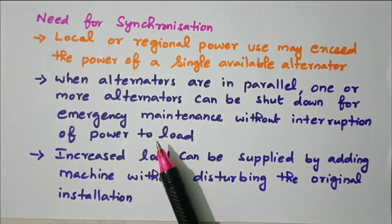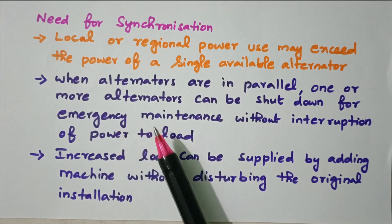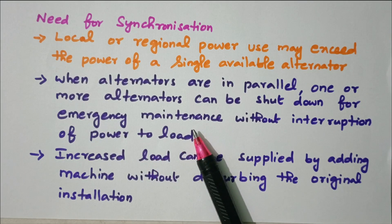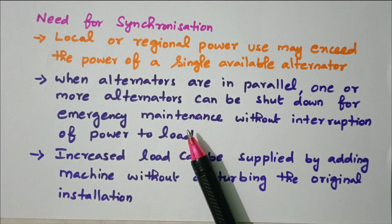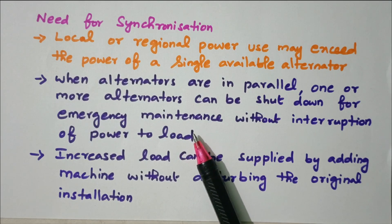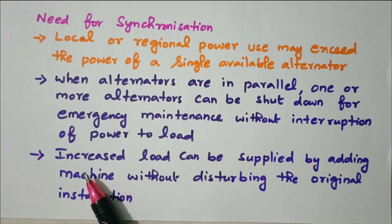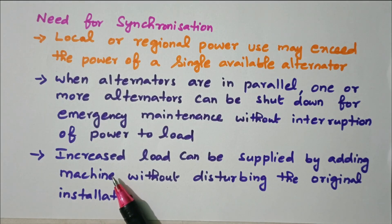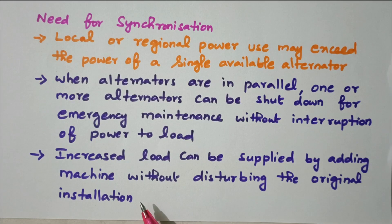Second, when alternators are in parallel, one or more alternators can be shut down for emergency maintenance without interruption of the power to the load. Any alternator needing emergency work can be shut down while others continue to meet the power. Third, increased load can be supplied by adding a machine without disturbing the original installation — for example, during peak hours in the evening.